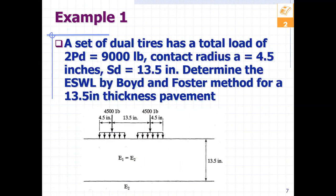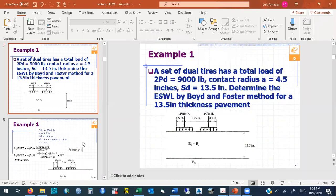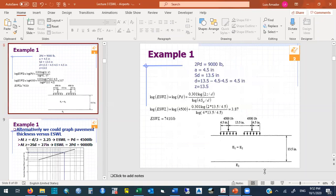Let's have a set of dual tires with 9,000 pounds total — so 4,500 pounds each. The contact radius is 4.5 inches and the separation between them is 13.5 inches. We are going to use the equivalent single wheel load to estimate the thickness.